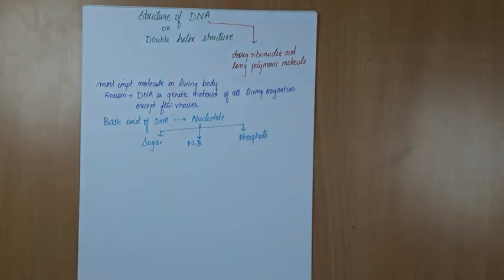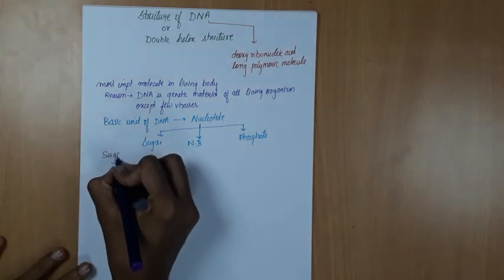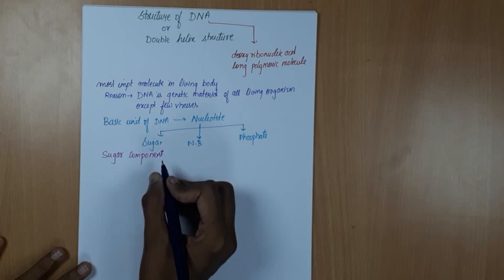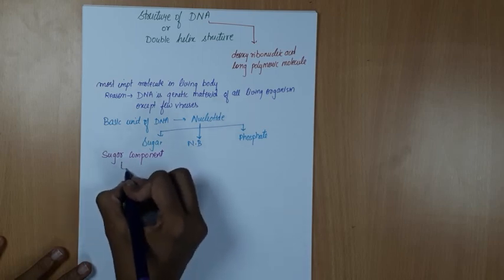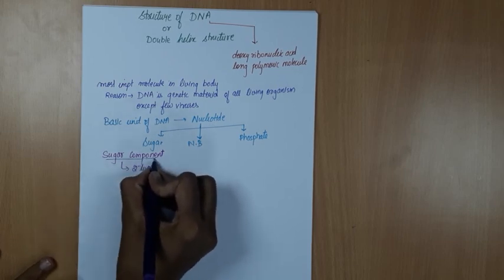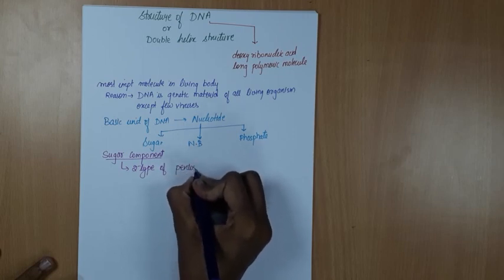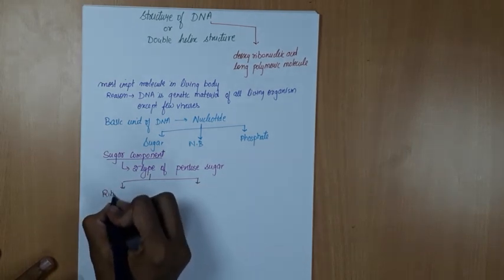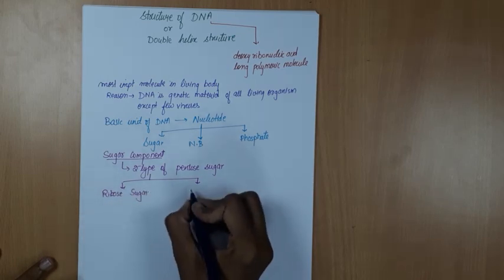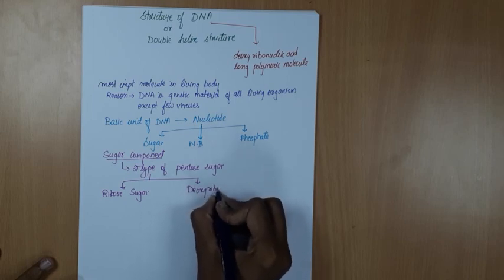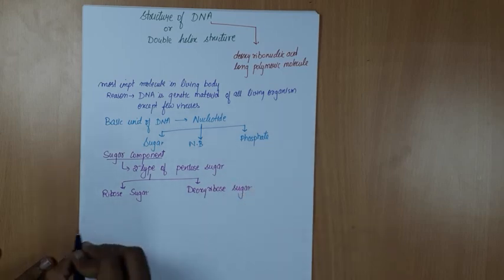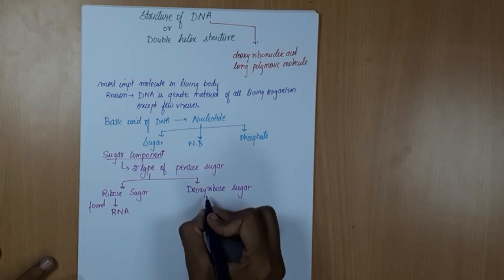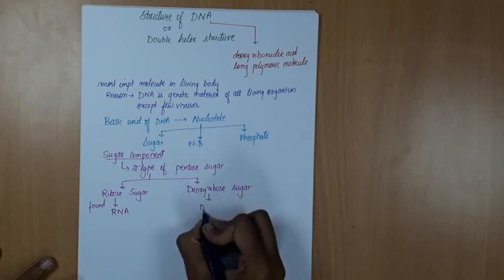First, we will discuss about the sugar component. There are two types of pentose sugars present in nucleic acid. The first one is ribose sugar, and the second one is deoxyribose sugar. Ribose sugar is found in RNA and deoxyribose sugar is found in DNA.